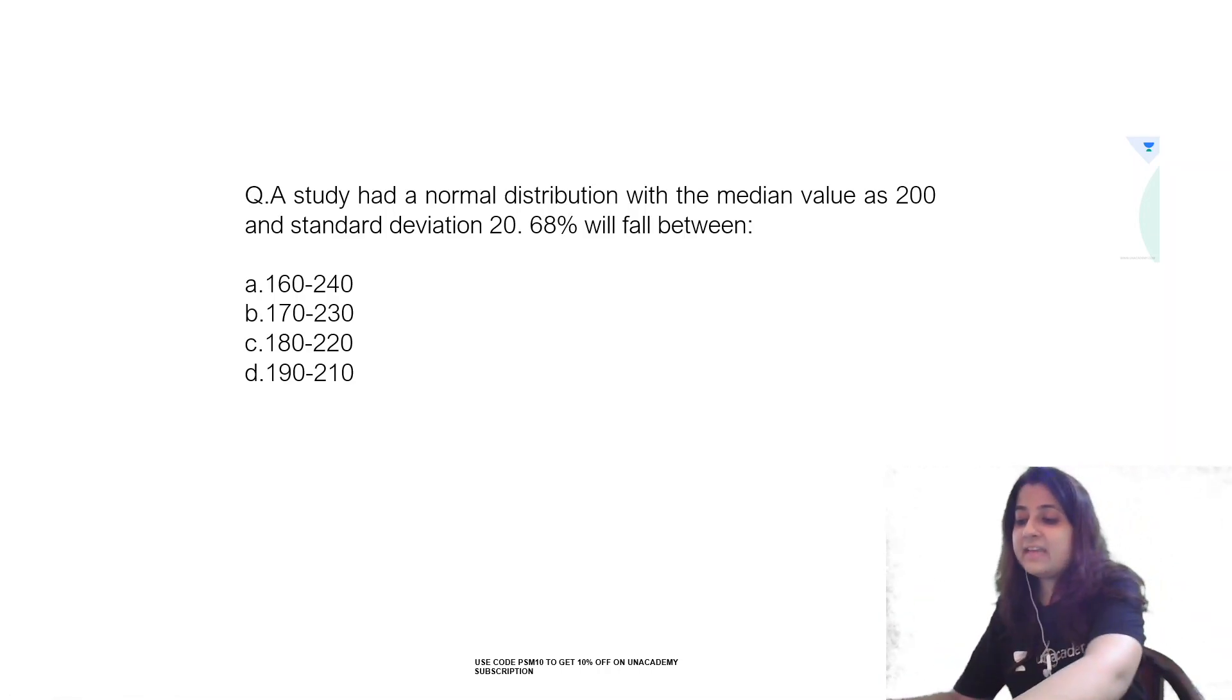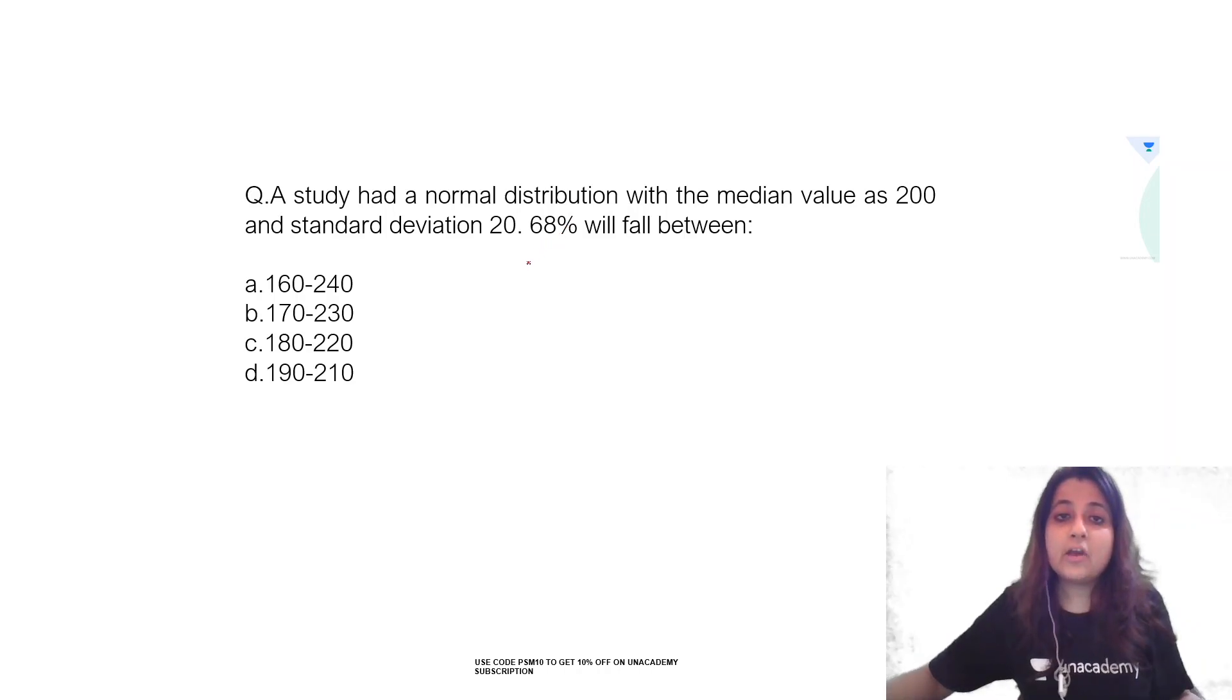Now this is a very important question. This is from the topic of normal distribution. Now if you have a normal distribution curve, you all know what is the shape of a normal distribution curve. If you have to write its points, it is bell shaped, it is symmetrical.